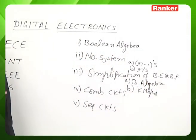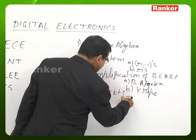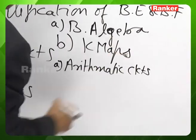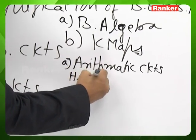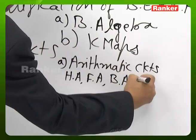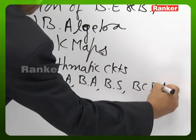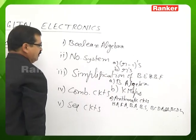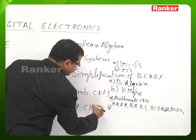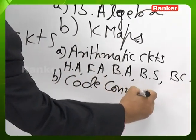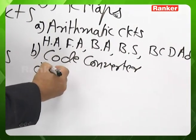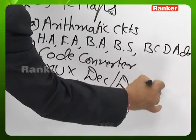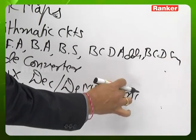In Combinational Circuits, we cover arithmetic circuits including half-adder, full-adder, binary adder, binary subtractor, BCD adder, BCD subtractor, and related circuits. We also look at code converters, IC blocks, multiplexers, decoders, demultiplexers, encoders, and related circuits.